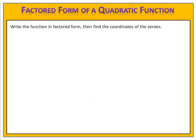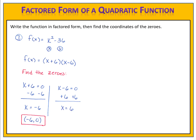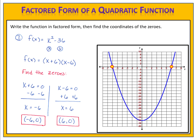What if we have a quadratic function that is a difference of two perfect squares? Remember, that can be factored. x squared minus 36 can be factored to x plus 6 times x minus 6. So this function is f of x equals x plus 6 times x minus 6. We follow the same process: take each factor, set it equal to zero, and solve. We get x equals negative 6 and x equals positive 6, giving us x-intercepts at negative 6 comma 0 and positive 6 comma 0.